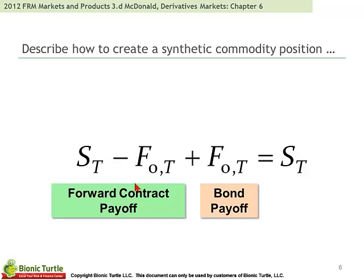McDonald makes the point that we can create a synthetic commodity position by combining a forward and a bond. One thing we can do is just invest in crude oil, so that if the price of crude oil goes up in the future — net of storage costs — that may be a gain to us. But we can synthetically invest by taking a long position in a forward contract, which aside from margin or collateral would not be funded, so we can take the same proceeds and invest them in a bond. A forward contract plus a bond investment is a synthetic equivalent to just investing in the spot.